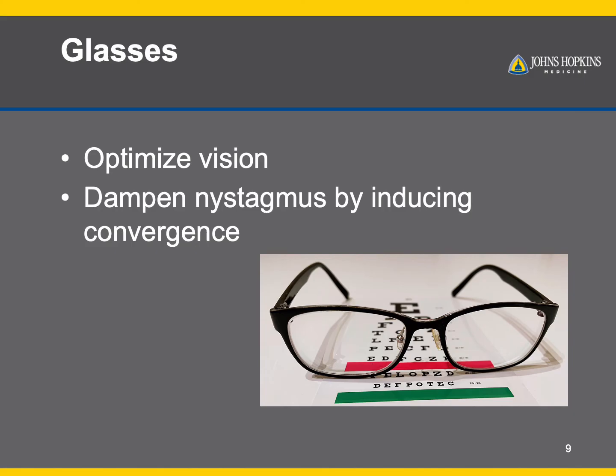Glasses can optimize vision and improve visual acuity by correcting refractive errors, which can be high in patients with nystagmus. Glasses can also be used to make the eyes converge more. This is helpful in cases where the nystagmus dampens with convergence, such as in infantile nystagmus syndrome.